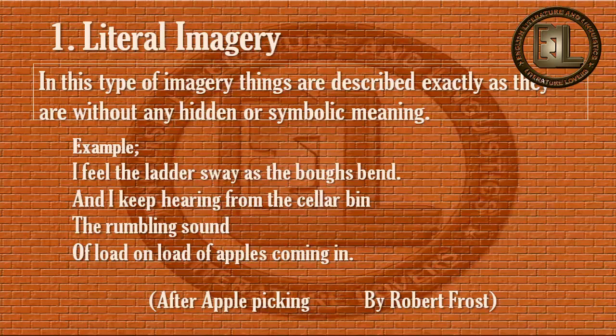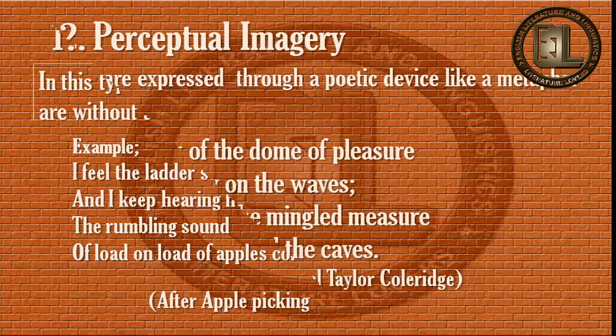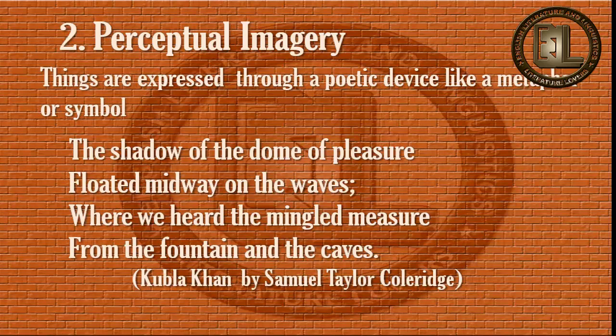Number 2: Perceptual imagery. In this type of imagery, things are expressed through a specific device or figurative language like a metaphor, simile, or any other symbol. The example is these lines from Kubla Khan by Coleridge: 'The shadow of the dome of pleasure floated midway on the waves, where was heard the mingled measure from the fountain and the caves.' In this line, the dome represents the whole palace which Kubla Khan had built in Xanadu. The dome has no literal meaning but symbolic meaning.